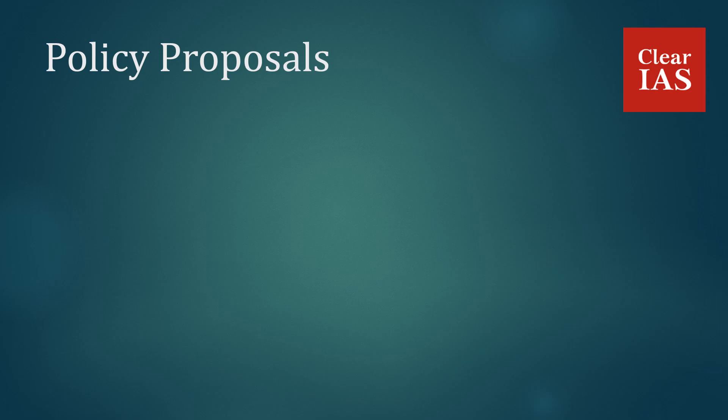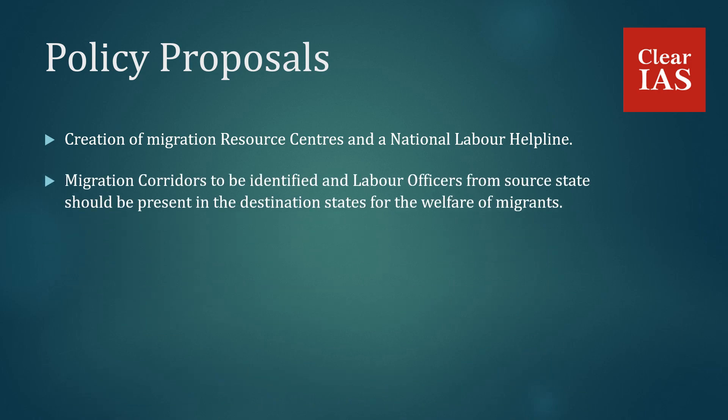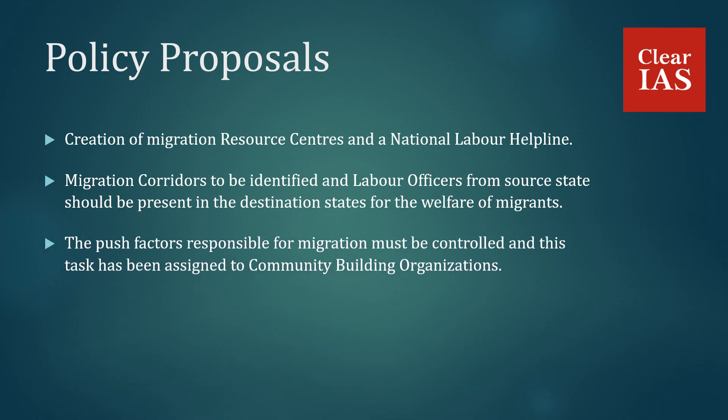Policy Proposals: The policy proposes creation of migration resource centers and a national labour helpline. Migration corridors are to be identified, and labour officers from the source state should be present in the destination state for the welfare of migrants. For example, migration from states like Uttar Pradesh and Bihar towards more developed states like Maharashtra — such high-migration corridors must be identified. The push factors responsible for migration must be controlled, and this task has been assigned to community building organizations.